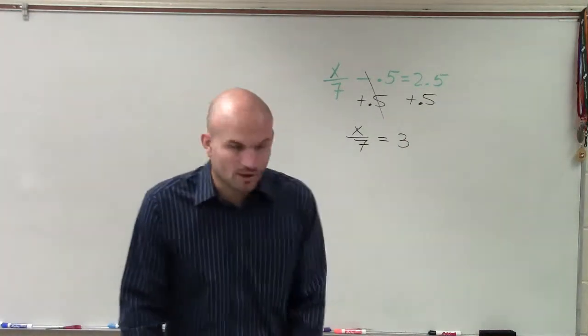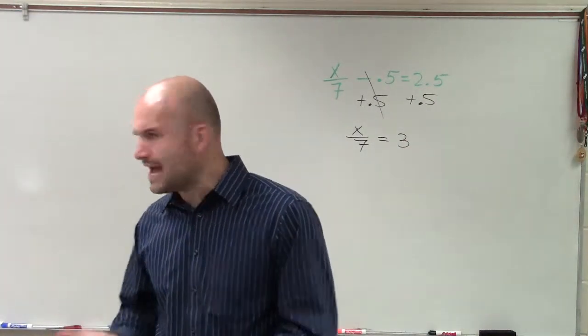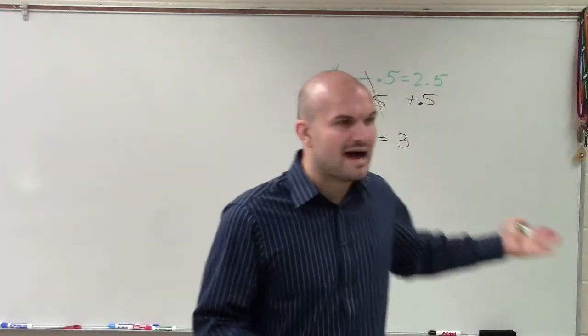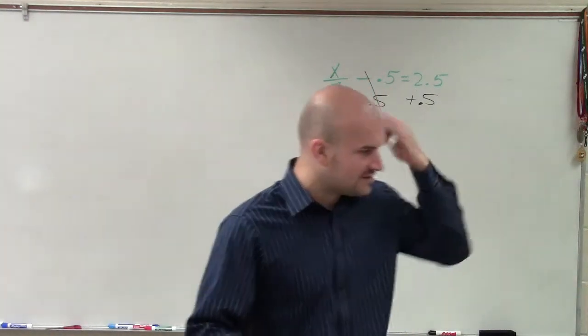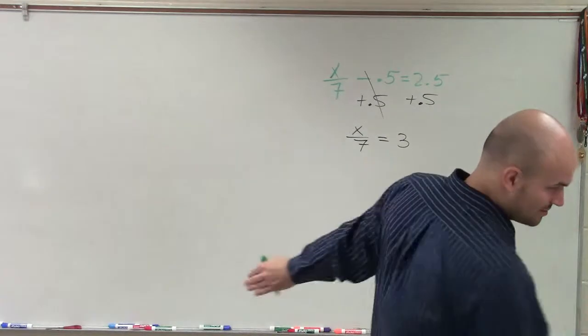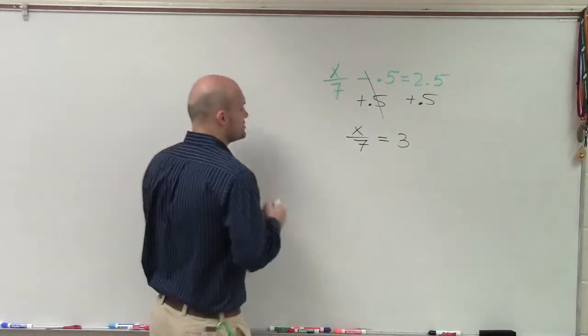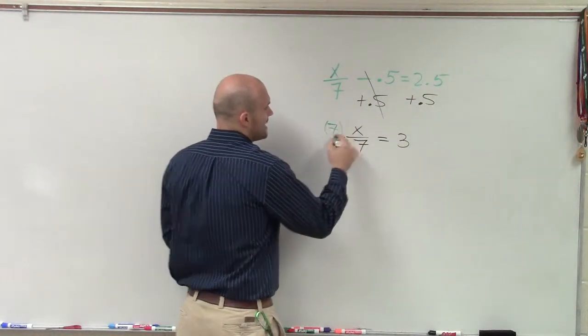Now I need to look at my variable x and say, what is happening to my x? My x is being divided by 7. So therefore, to undo division by 7, you have to do multiplication. Multiplication. Thank you very much. So I multiply by 7 on both sides.